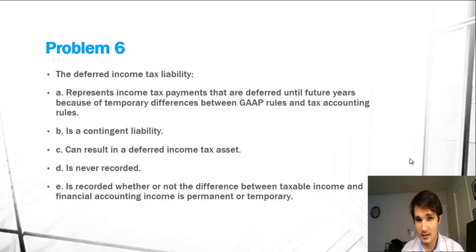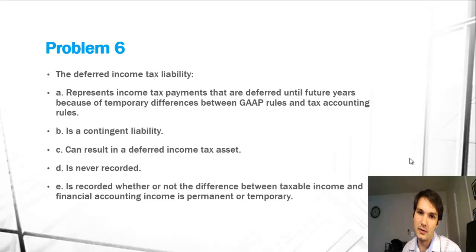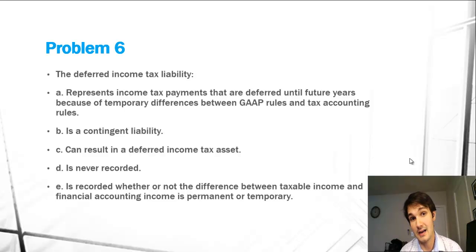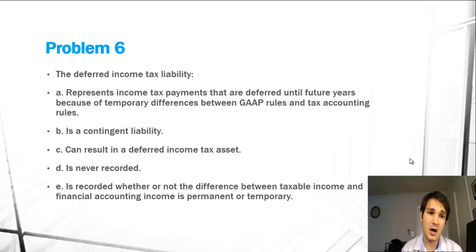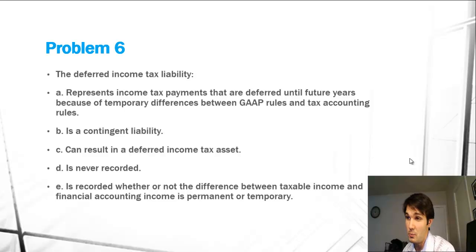B is not correct — it is not a contingent liability. C is not correct because income tax assets aren't created through income tax liabilities; they're created through the differences in GAAP rules and tax accounting rules as well. Deferred Income Tax liabilities are recorded. And E is not correct because it is not recorded whether or not the difference between taxable income and financial accounting income is permanent or temporary.